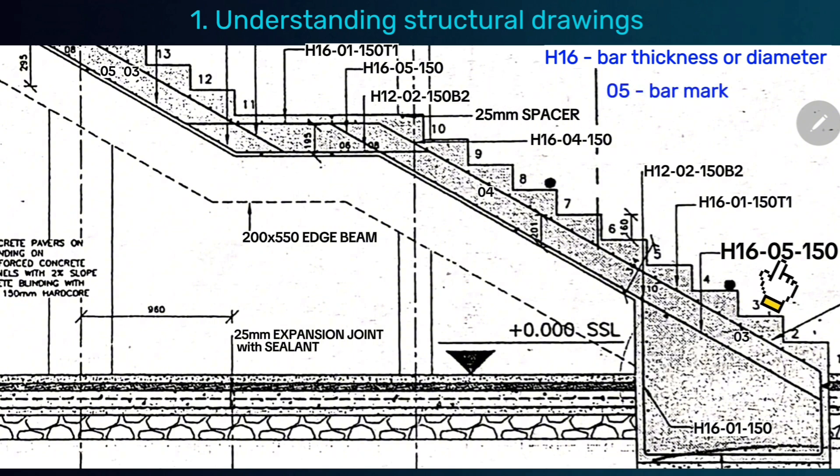Bar Mark 5 shows us where our steel bars start and end from. For example, this is bar Mark 5, which starts from here, comes like this and stops where you see this 5 here. Then this 150 means the spacing from one steel bar to another center to center. Since we are using millimeters as the standard unit in this structure drawing, this simply means this will be 150 millimeters.